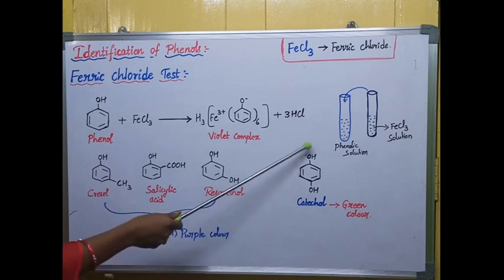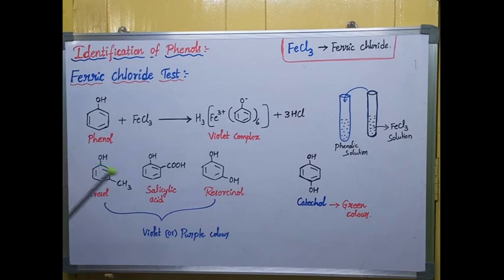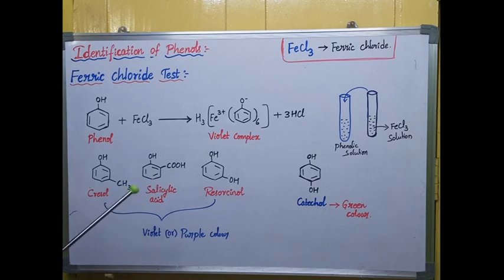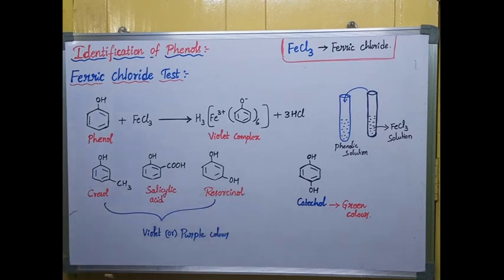If you take catechol solution and add ferric chloride, you will get a green colored solution. So based on colors we can identify which phenolic compound it is. If you get violet or purple color, we can say it is phenol, cresol, salicylic acid, or resorcinol. If you get only green color, we can say it is catechol. This is the ferric chloride test, mainly useful to identify the phenolic group in the laboratory.